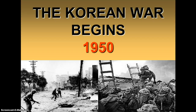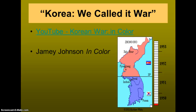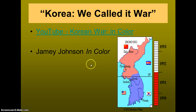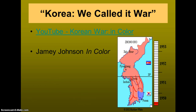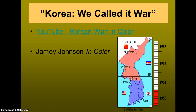Turn to page two of your guided notes — now the Korean War begins. Take a look at the right side and watch the colors change, going back and forth between the north and the south and the spread of communism. There's a YouTube clip by Jamie Johnson in color that shows this. The whole animation goes from 1950 to 1953.